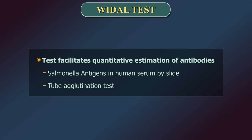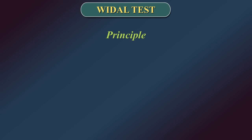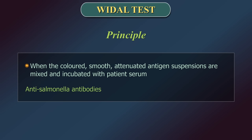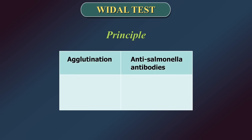This test facilitates quantitative estimation of antibodies to Salmonella antigens in human serum by slide and tube agglutination test. When the colored, smooth, attenuated antigen suspensions are mixed and incubated with patient serum, anti-Salmonella antibodies present in the patient serum react with the antigen suspensions to give agglutination. Agglutination is a positive test result; absence of agglutination is a negative test result.